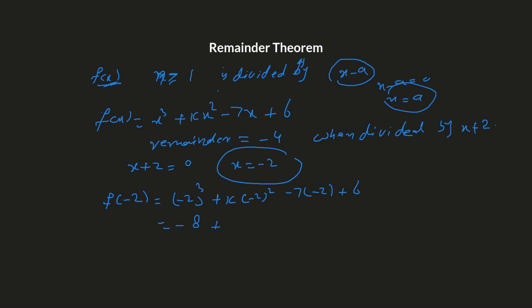That gives negative 8 plus 4k plus 14 plus 6, which simplifies to 12 plus 4k. That is f of negative 2. It is given that the remainder is negative 4, so you can set up the equation: 12 plus 4k equals negative 4. Subtract 12 from both sides to get 4k equals negative 16. Divide both sides by 4, so k equals negative 4.